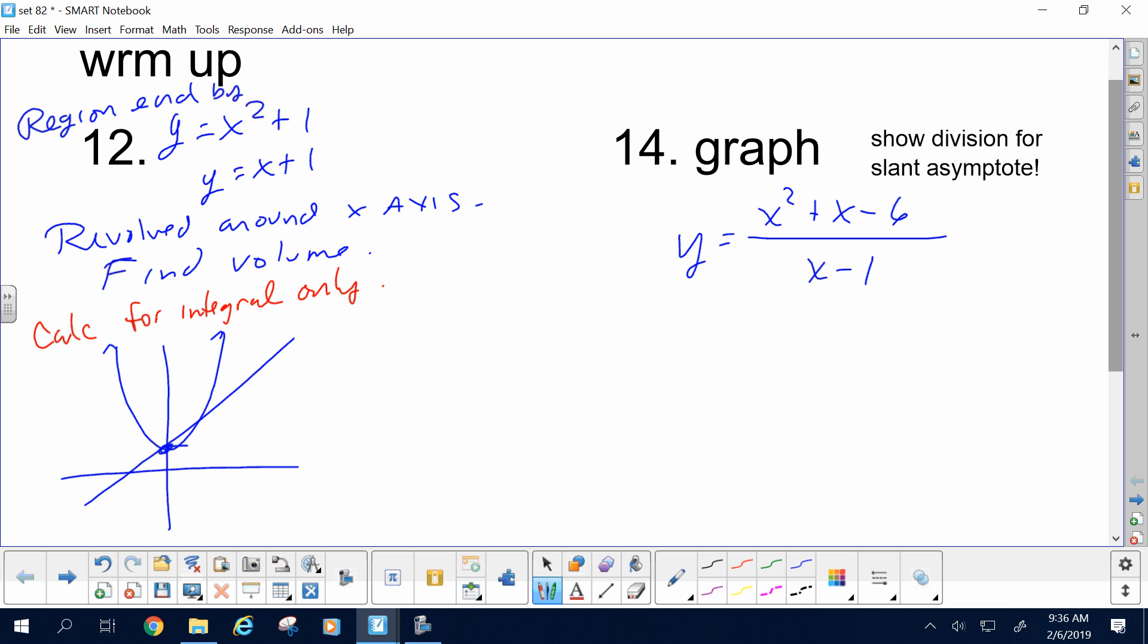The question is, what's the region look like? The intersection might help us a little bit. To find the intersections of the region, we need to set the equations equal. The 1's drop out, and we get x squared minus x equals 0, which factors into x times x minus 1, which tells us they intersect at 0 and 1.